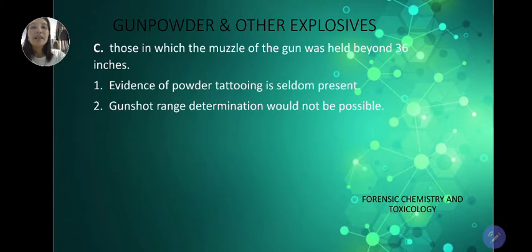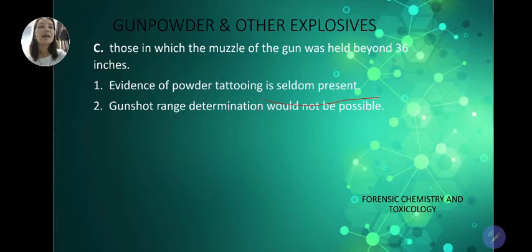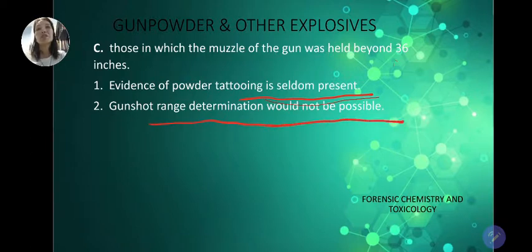Zone C: the muzzle of the gun was held beyond 36 inches. When the distance is greater than 36 inches, evidence of powder tattooing is seldom present. Gunshot range determination would not be possible — it becomes difficult to determine if the shot was fired from beyond 36 inches.